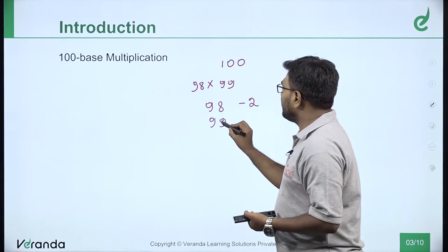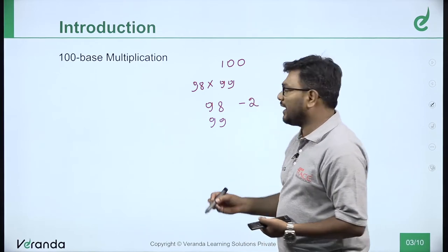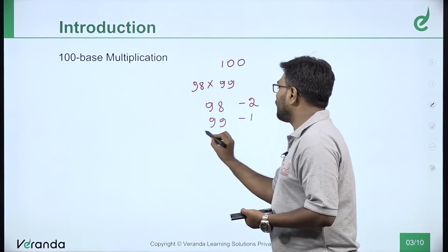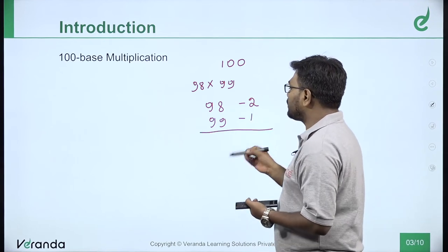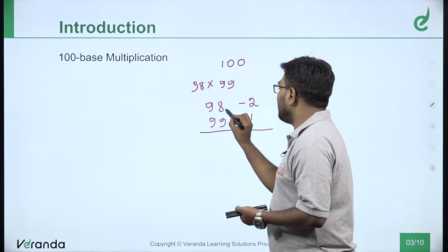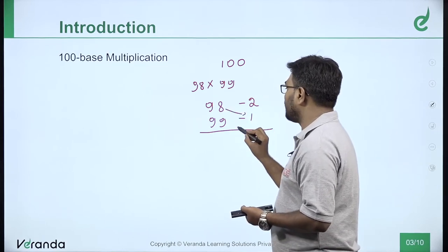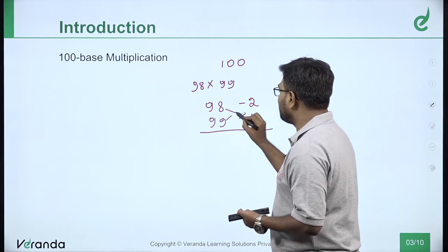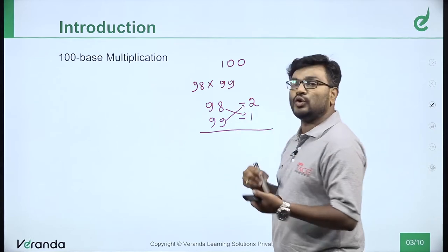Now the next step: first step is to find the difference. Second step, use the cross method - either 98 minus 1 or 99 minus 2. This is one method.